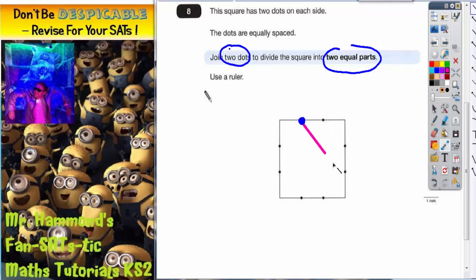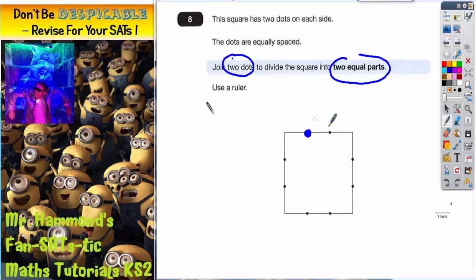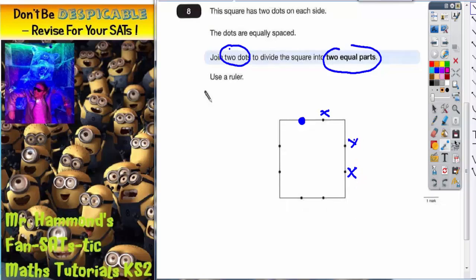If I join this dot down to the next dot that's available, again you can see this bit of the square is much smaller than this bit, so it can't be that dot either. So we've already established that it can't be that one, it can't be that one, and it can't be that one, so we're slowly eliminating which dot it can be.